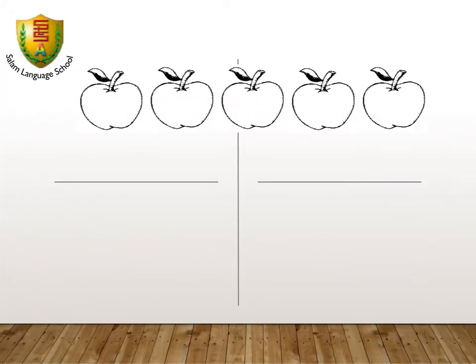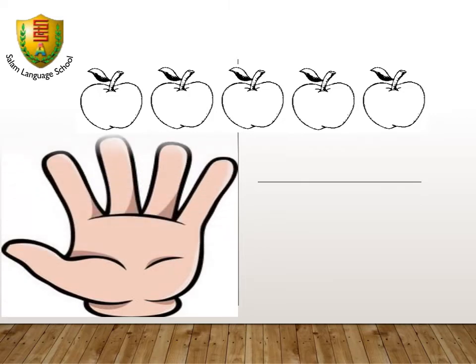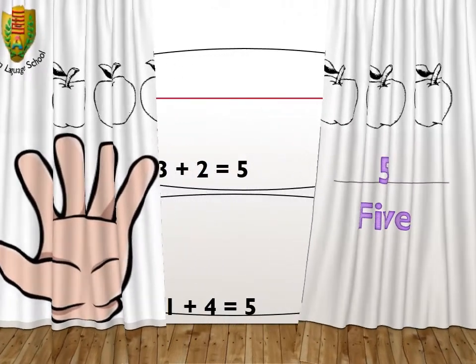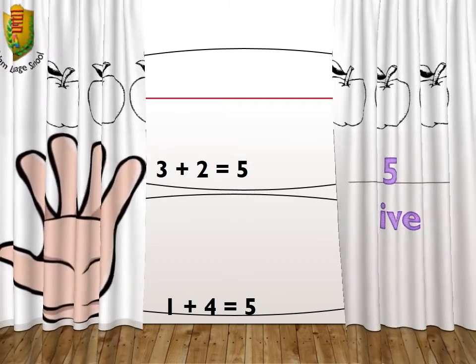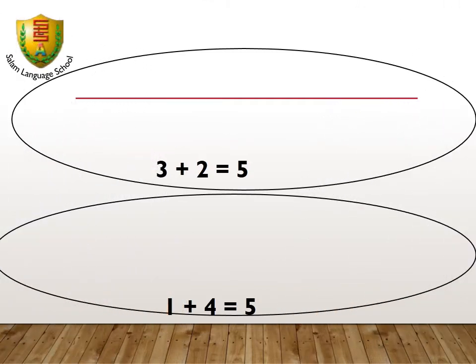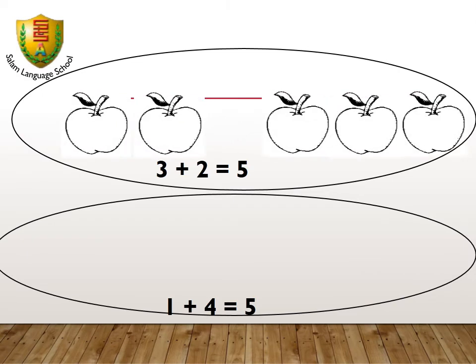Our new lesson today is about number 5. We have 5 apples. Show me 5 on your hand. 5 is formed from 3 and 2, and it can also be formed from 4 and 1.